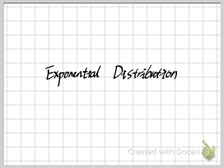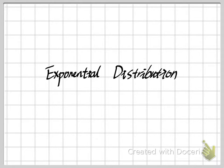Hello, everyone. Welcome to my channel. In this video, I want to continue to give some examples of continuous random variables. In previous videos, we always talked about normal random variables, which are very important in statistics and probability. In this video, I want to talk about another important example of a continuous random variable: the exponential distribution, or exponential random variable.